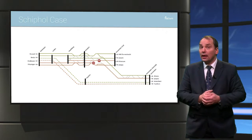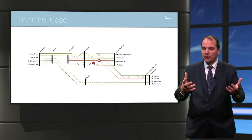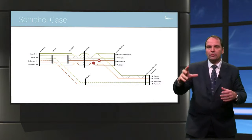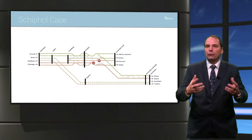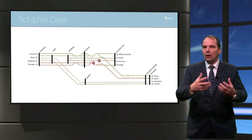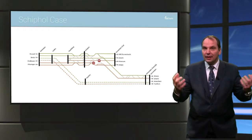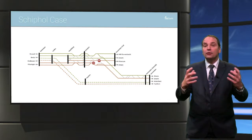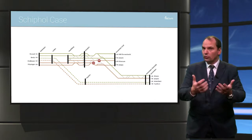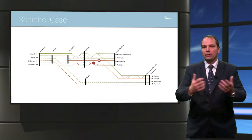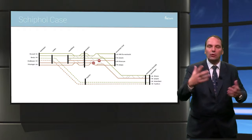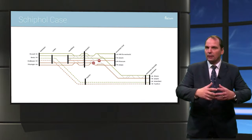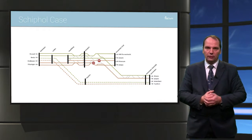For example, we have the case of Schiphol. When you have disruptions on one or two platforms on one line, it sounds manageable — we can handle that. But we also see in this case that there is a lot of radiation of delays onto other tracks and other cities, and other train connections. So it sounds easy to say you only have one problem on one line, but it can affect all kinds of other lines nationwide.